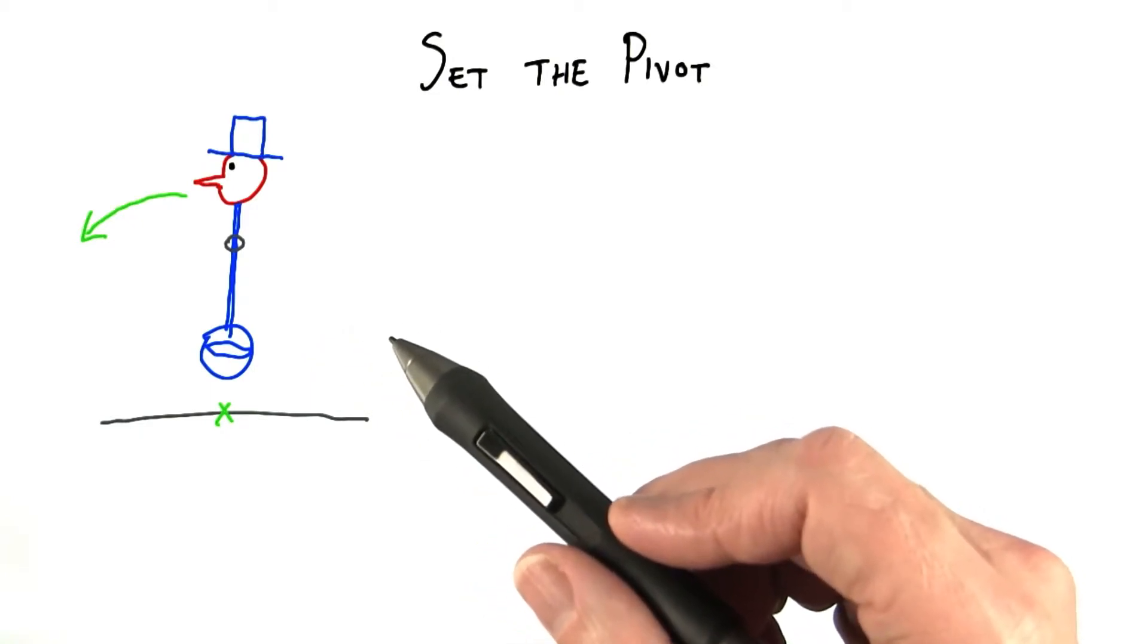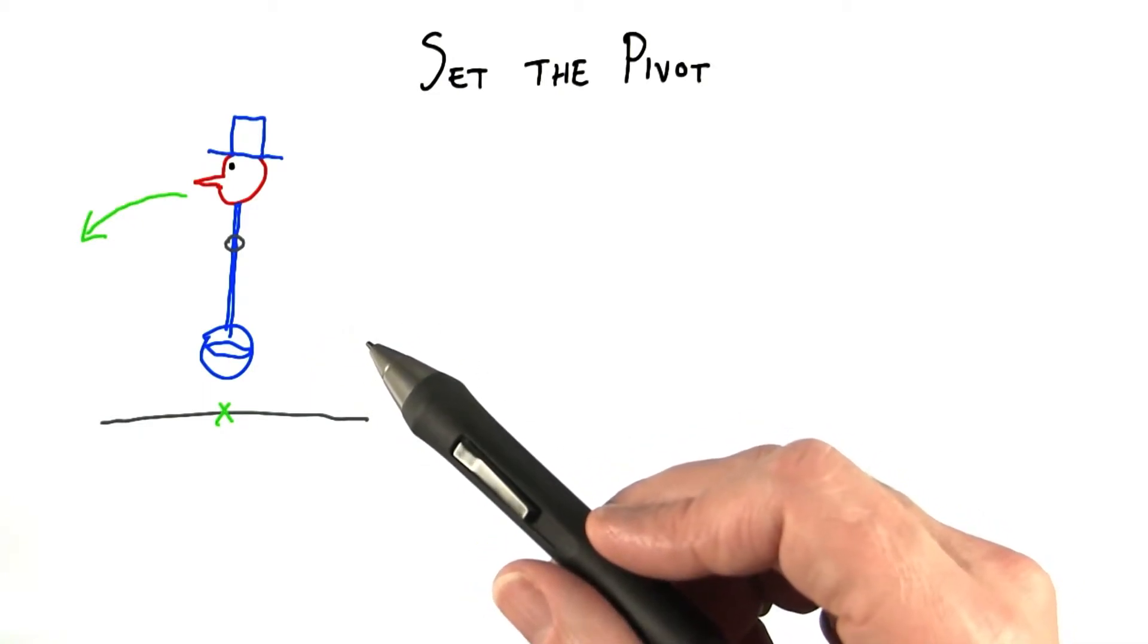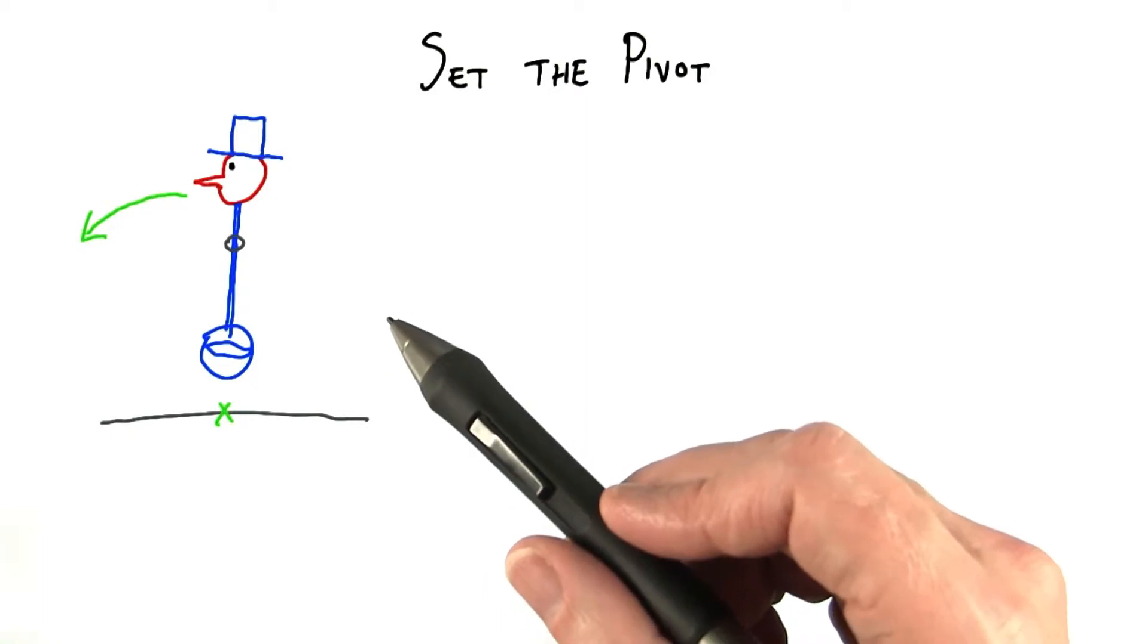Think back to the unit on transforms. We saw how the snowman's arms could go to the wrong place with a bad order of transforms.